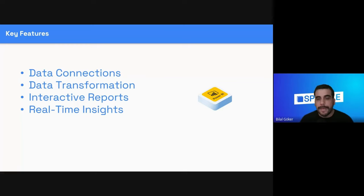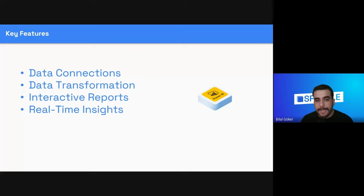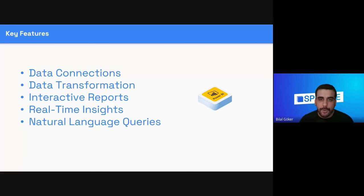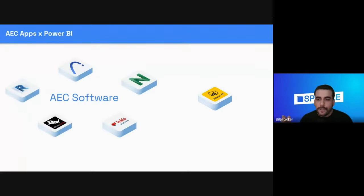You can get real-time insights from your Power BI reports — that is actually what we are going to highlight in this session. We will connect to the Speckle server, send some new versions from Revit, see those changes reflected in Power BI. You can also do natural language queries on your data; Power BI recently enabled a Q&A feature which allows you to ask questions using natural language and receive instant visual answers.